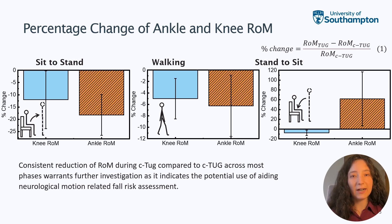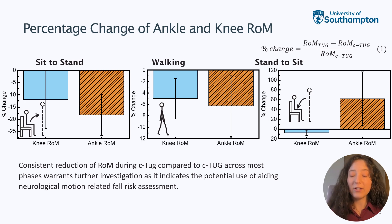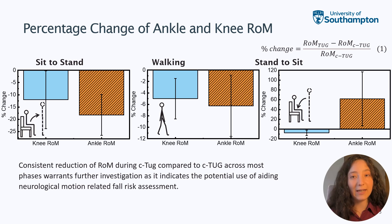Most TUG and C-TUG phase comparisons had a reduction in range of motion, possibly attributed to the extra work required for lower limb joint coordination during the C-TUG. This could enable further studies on cognitive impairment's effect on gait.